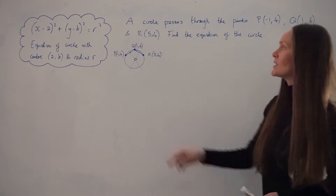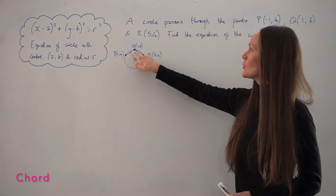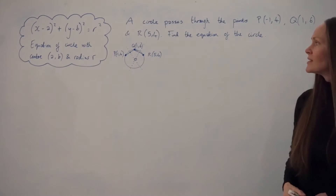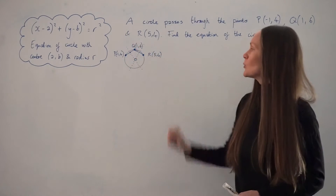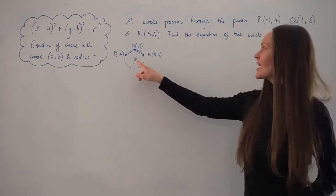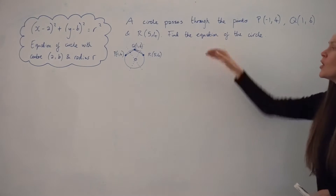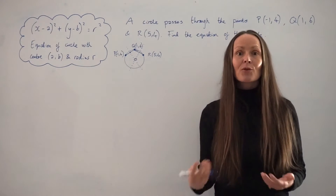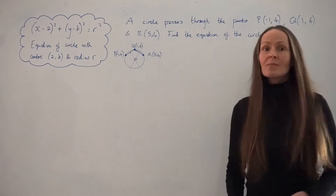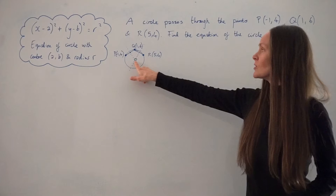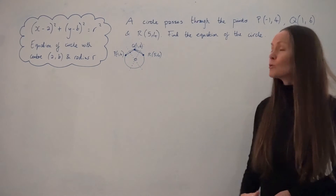Here's the circle with the three points P, Q and R. I've joined the points up with straight lines — there's a chord from P to Q and also Q to R — and there are two dashed lines. Those dashed lines are the perpendicular bisectors of the chords PQ and QR. Whenever perpendicular bisectors intersect on a circle, they pass through the centre. To write down the equation of a circle we need the coordinates of the centre and the radius.